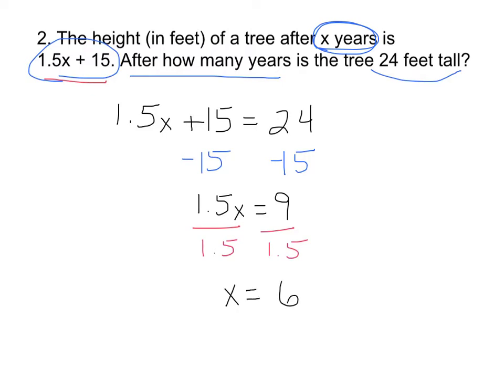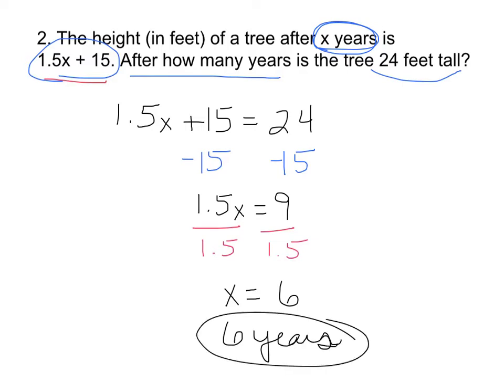9 divided by 1.5 is 6. This is a word problem, so you must state what the answer means. After how many years is the tree 24 feet tall? After 6 years — that is your answer.